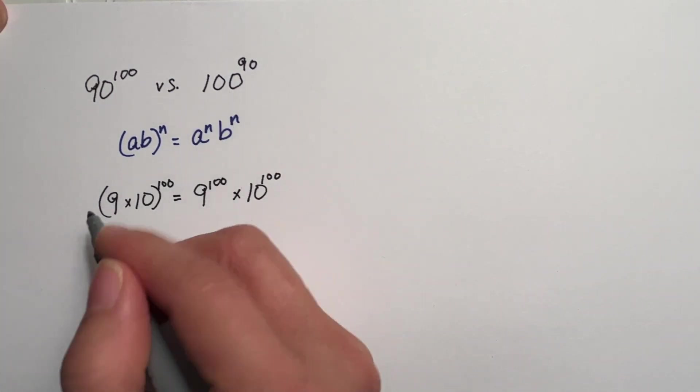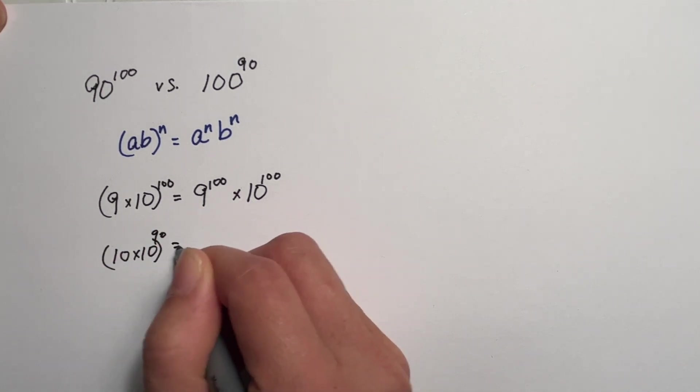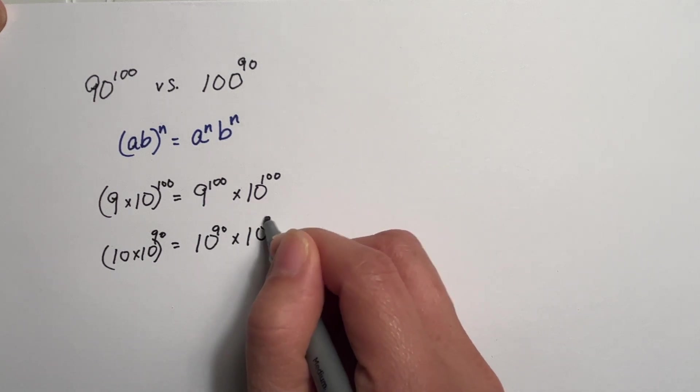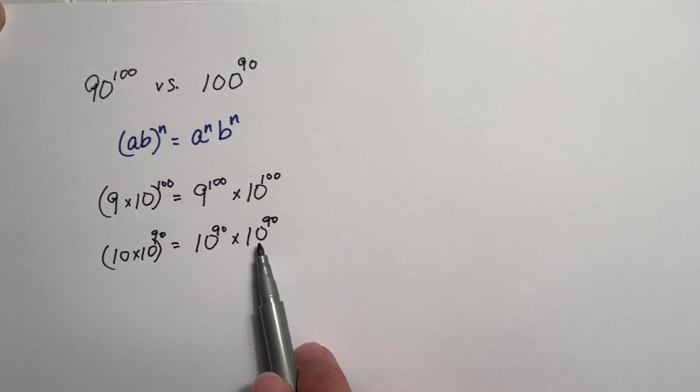100 raised to the 90 becomes 10 times 10 raised to the 90. We get 10 raised to the 90 times 10 raised to the 90. Now let's compare these two values.